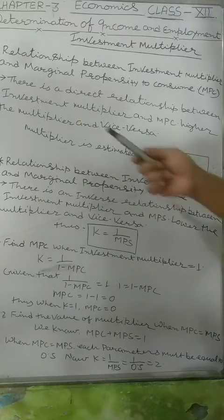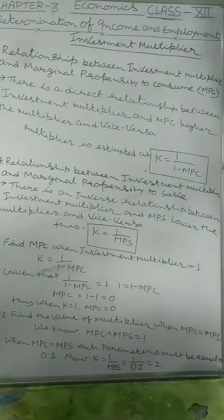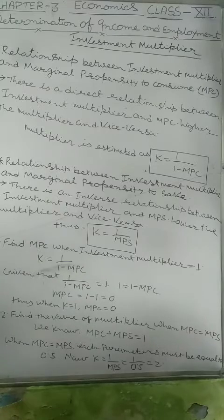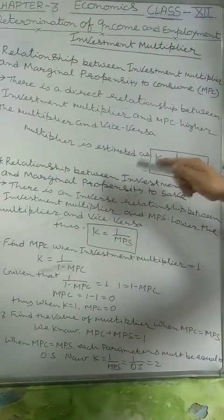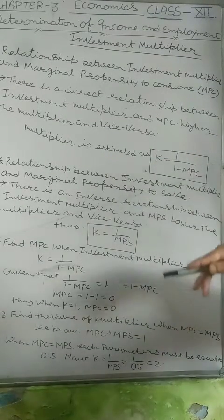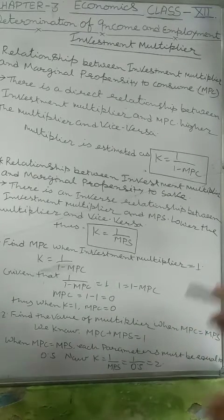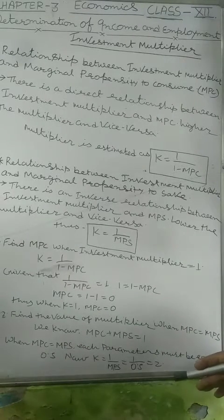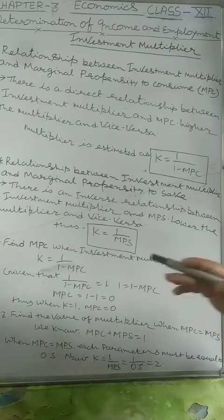There is a direct relationship between investment multiplier and marginal propensity to consume. MPC and investment multiplier are positively associated with each other — higher the MPC, higher the multiplier, and vice versa. It means MPC is primarily and directly responsible for the value of the multiplier, because the value of the multiplier depends upon the propensity to consume. Higher the propensity to consume, higher the multiplier value; lower the propensity to consume, lower the multiplier value.